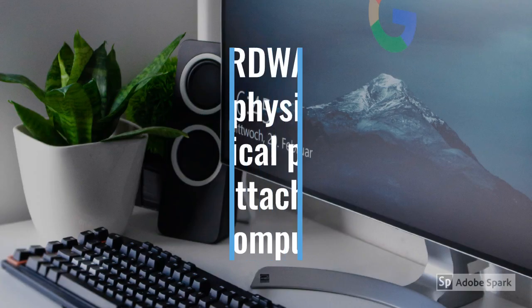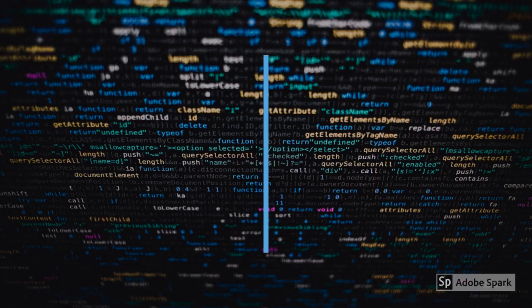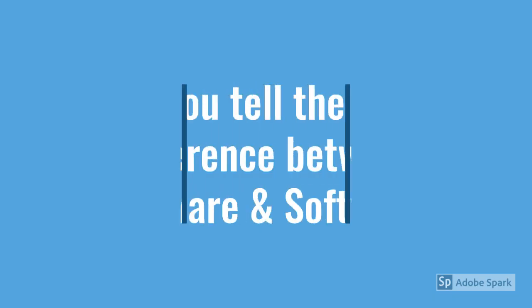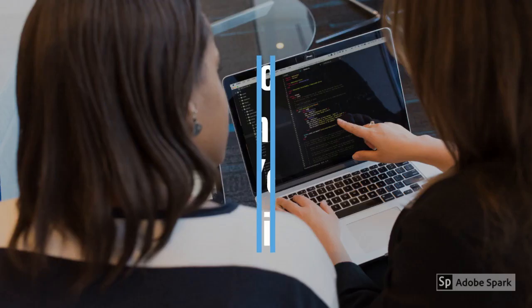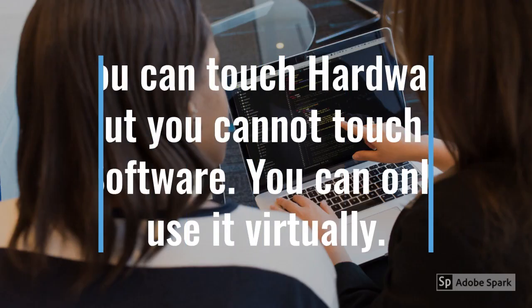You have learned about hardware and software earlier. All the physical and mechanical pieces of equipment attached together to make a computer system form the hardware. A software tells the computer what to do and how to do. You can touch hardware but you cannot touch software.